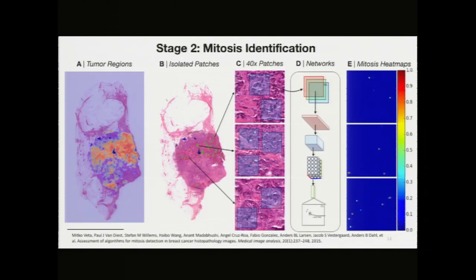The next stage after identifying tumor areas was to isolate relevant patches for mitotic figure identification and use those patches to make predictions as to where mitoses actually were in the image. We can identify the areas of highest tumor confidence and find mitoses within those areas, and subsequently perform convolutional neural network feature extraction and classification, as shown in figure D, to identify where all the mitotic figures were in figure E.